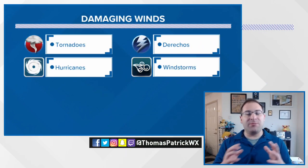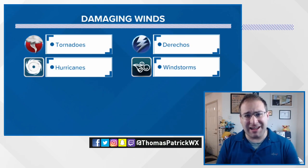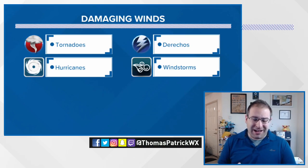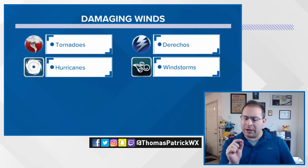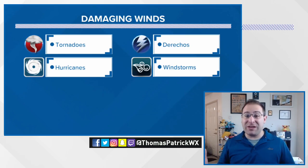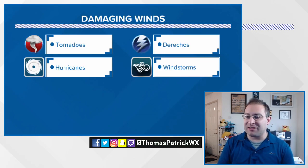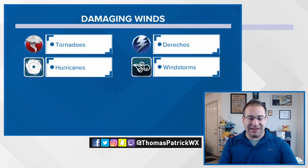Before we get into windstorms, let's look at the different weather events that can cause damaging winds. Tornadoes are obviously wind-driven but very pinpoint and isolated in terms of where the strongest winds are. Hurricanes have a much larger wind field and can be very violent — some hurricane wind speeds reach as high as 180 to 190 miles per hour in worst-case scenarios and can affect several states. Then there's the derecho, similar to the event in Iowa earlier this summer.